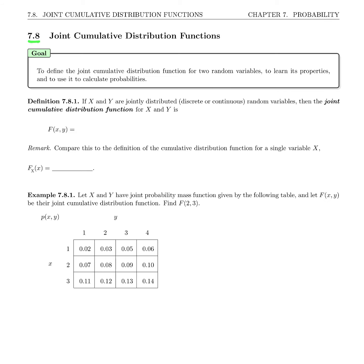Welcome to the beginning of section 7.8 on joint cumulative distribution functions. The goal of this section is to define the joint cumulative distribution function for two random variables, to learn its properties, and to use it to calculate probabilities.